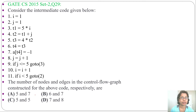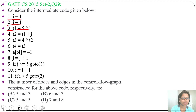Before constructing the control flow graph, first we need to identify the leaders. The first statement is a leader. Any statement that is the target of a conditional or unconditional jump is also a leader. So the second statement will be a leader, and the third statement will be a leader as it is the target of a jump. The next statement after a conditional or unconditional jump is also a leader, so statement 10 will be a leader.